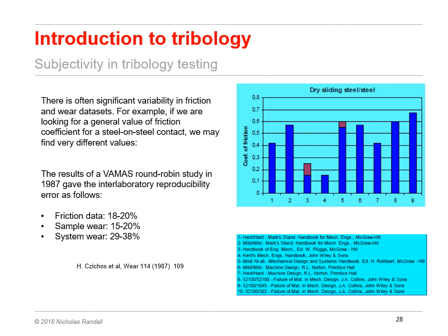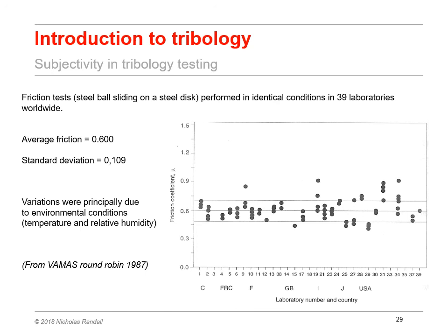Some time will be spent during this course thinking about subjectivity in tribology testing. Here's an example of friction coefficients recorded in literature for a steel-on-steel contact. You can see the incredible variations depending on test method, test conditions, and measurement technology. A VAMAS round robin study back in 1987 showed that reproducibility between different labs, testing the exact same material pair, could record variations in friction up to 20% and in wear up to almost 40%. The standard deviation between the 39 labs that participated was almost 20%. Much of the variation was thought to be due to different environmental conditions in the different countries that participated, which just goes to show the difficulties in getting truly reproducible test procedures.